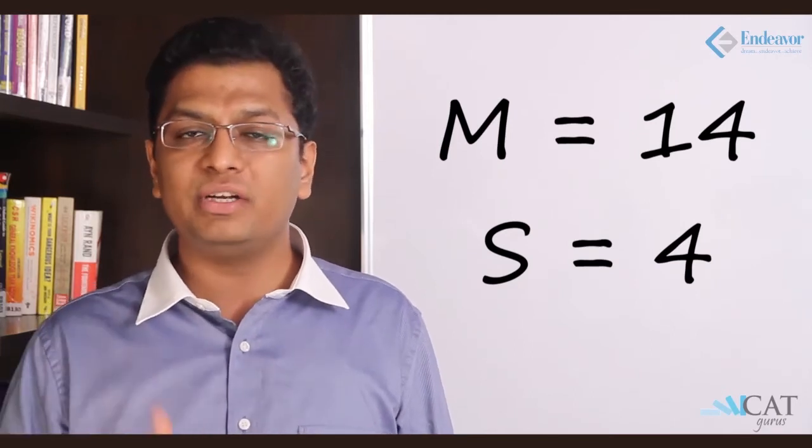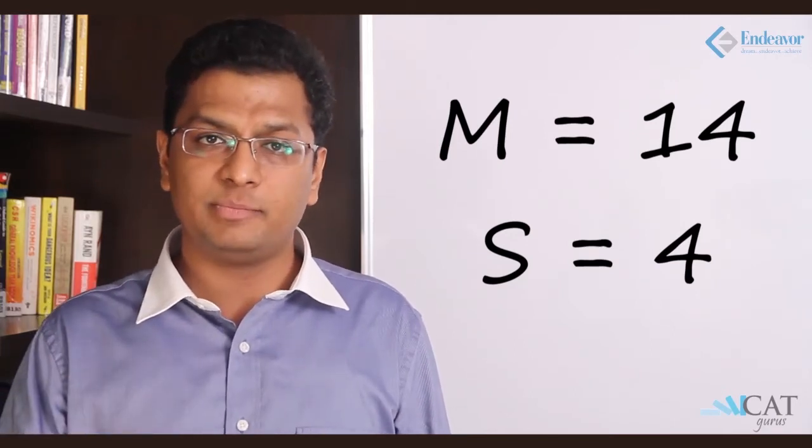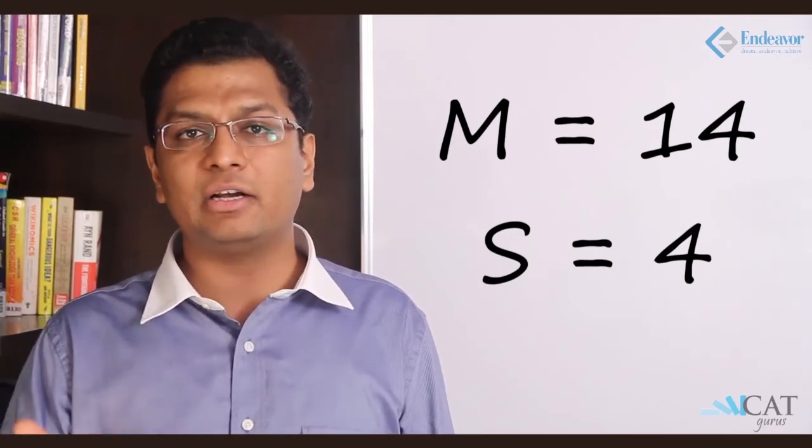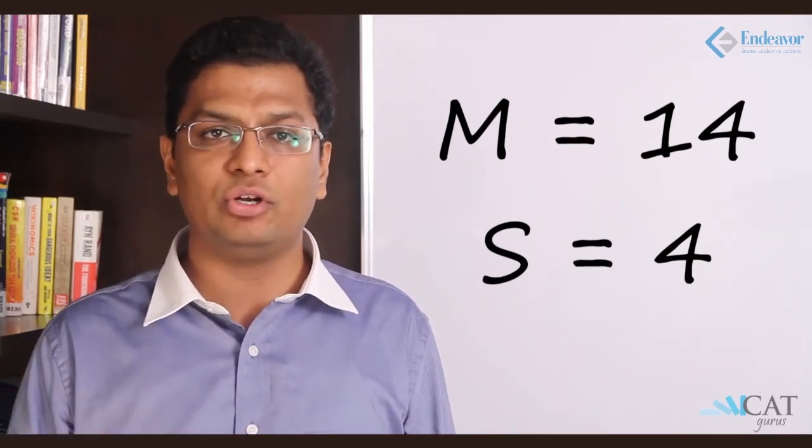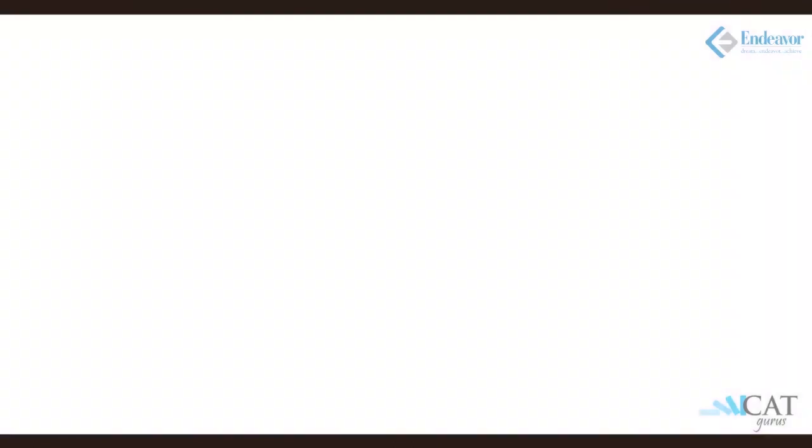So the speed of the man is 14 kilometers per hour and that of the stream is 4 kilometers per hour. This is how we can apply the same theories and concepts to solve many more problems related to boats and streams.